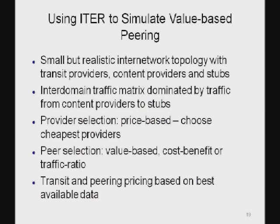We built a simulator for this model and used it to simulate value-based peering among many other things. The model is computationally expensive, so we can't run it at the scale of 34,000 ASes. We use a small but realistic Internet network topology modeling transit providers, content providers, and stubs. We parameterize an inter-domain traffic matrix dominated by traffic from content providers to stubs. We model various provider selection methods — sticking with price-based provider selection — and peer selection methods including value-based peering, cost-benefit-based peering where two networks peer only if both see a benefit, and traffic-ratio-based peering. Transit and peering pricing are parameterized according to available data.